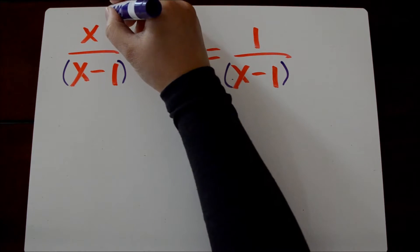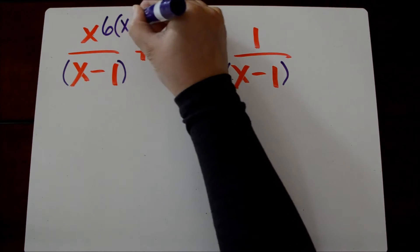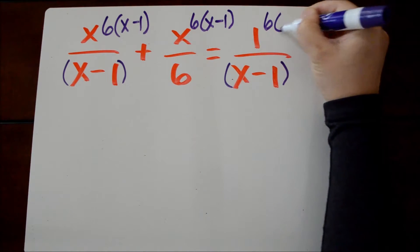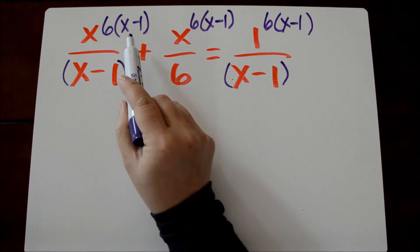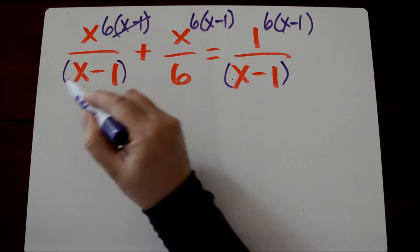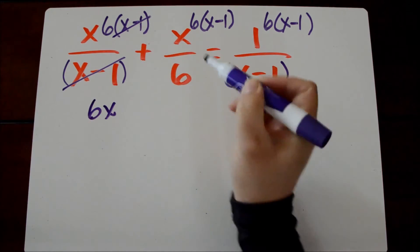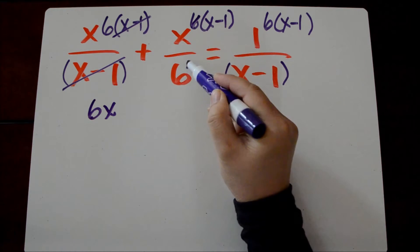So I'm actually going to multiply each term by 6 times x minus 1. And it's actually a lot easier than it looks because a lot of things are going to divide out. So here we're not going to distribute. We're just going to divide out the x minus 1 over x minus 1. And then what we have left to distribute is just x times 6, which is 6x. And then here we're going to divide out 6 divided by 6 because that's just 1.